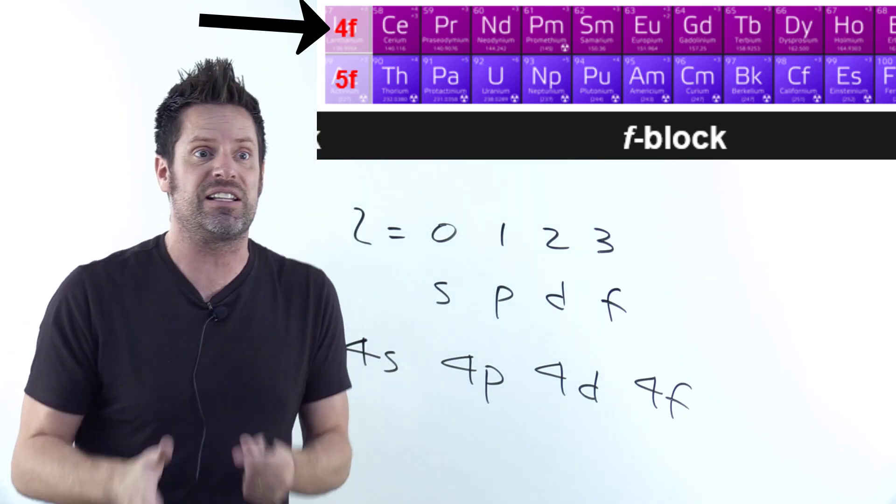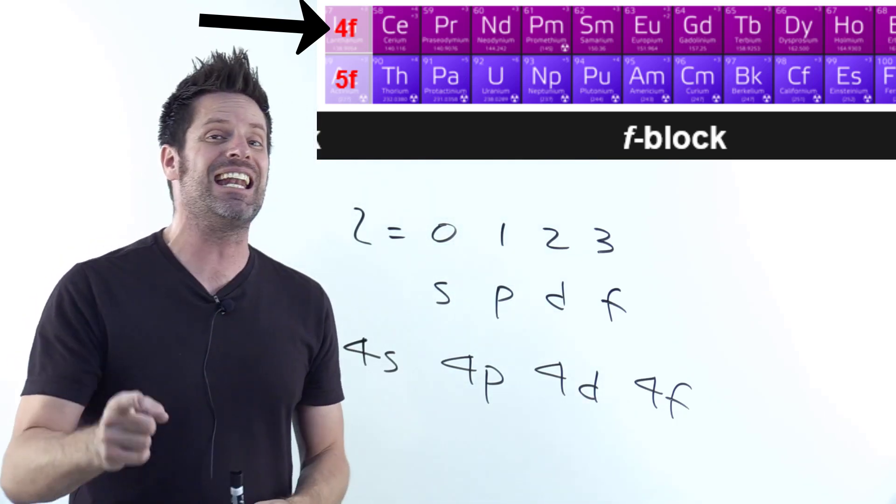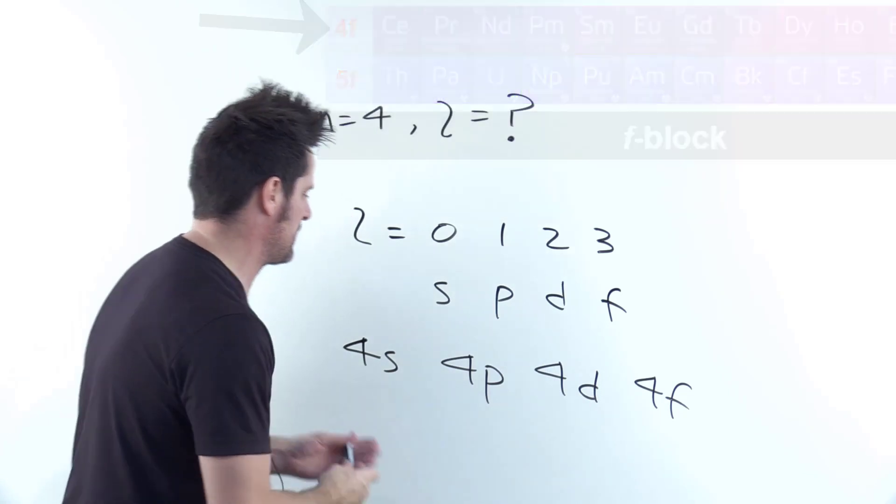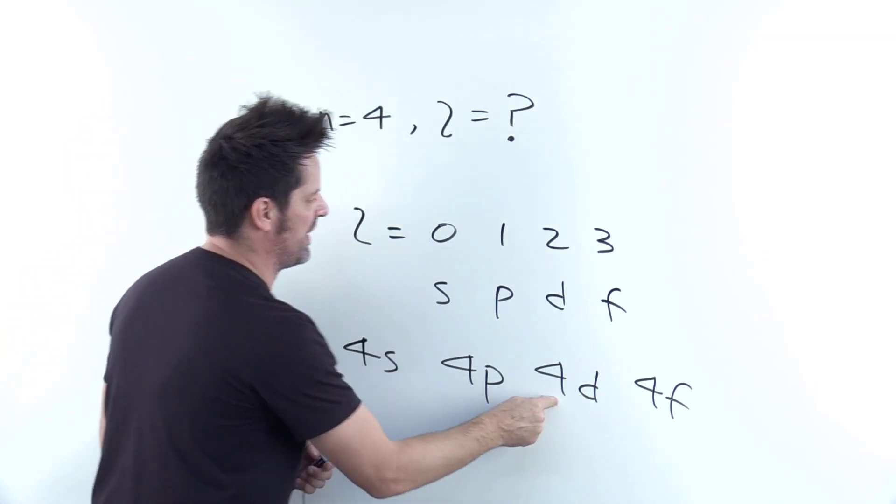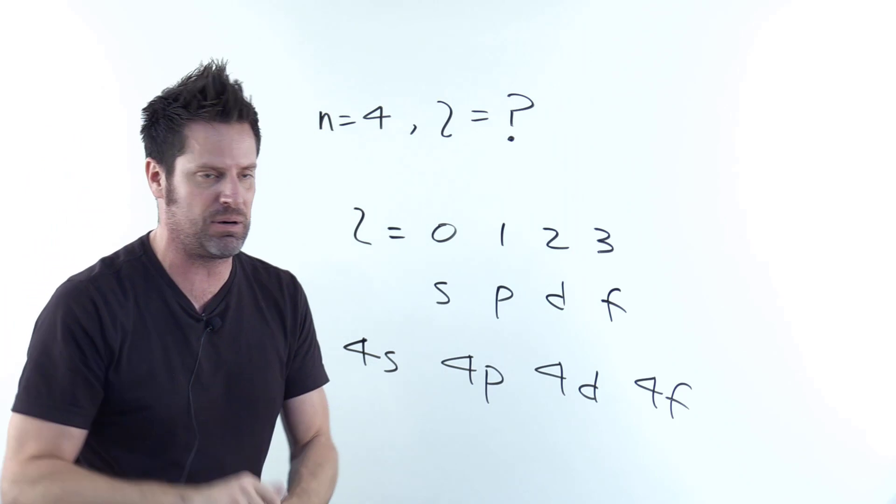The lowest energy level you can have and still hit an f orbital is n equals 4. That is a 4f, because all these first numbers you see in these electron configurations, those are the n or principal quantum numbers.